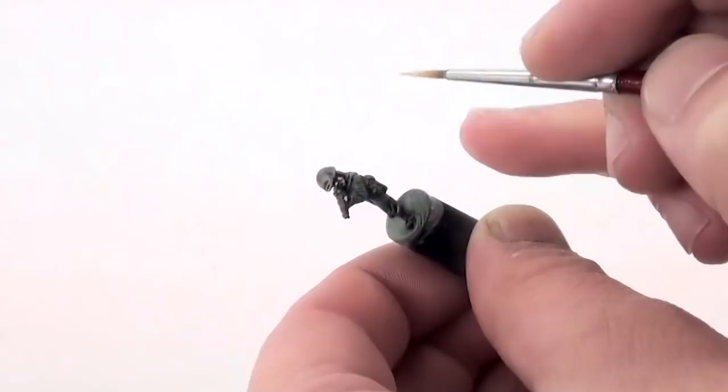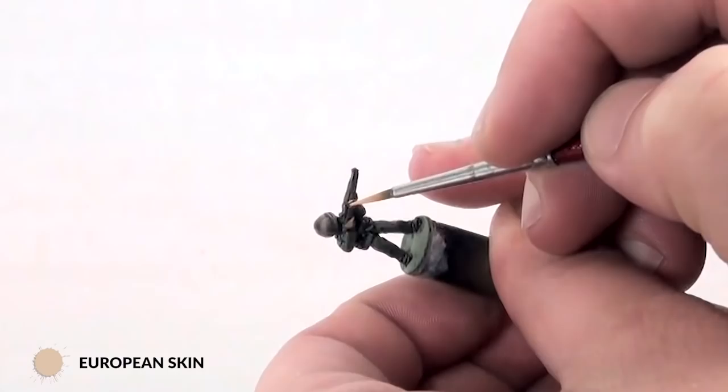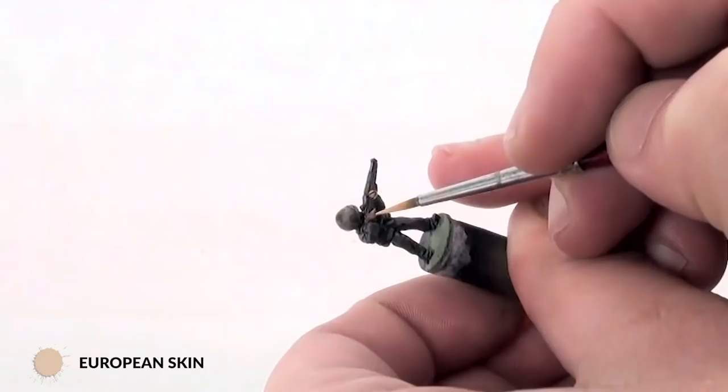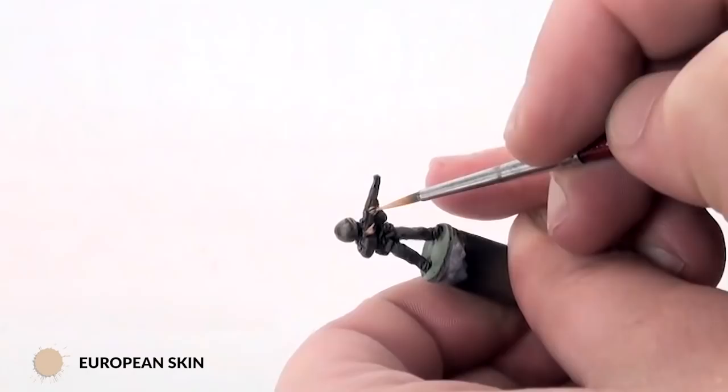Once I've used this mix, I'll then go back and get a little bit of European skin, and just paint the very, the really exposed parts of the skin. So fingers, the nose, the sort of upper parts of the cheeks and chin.